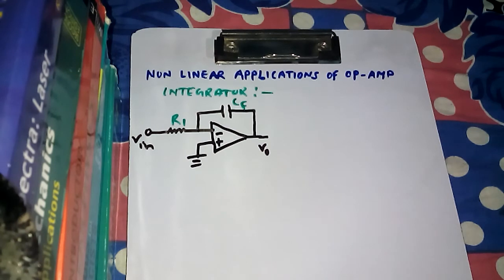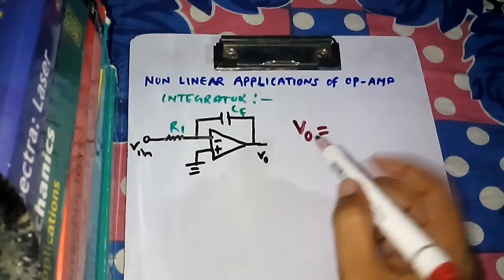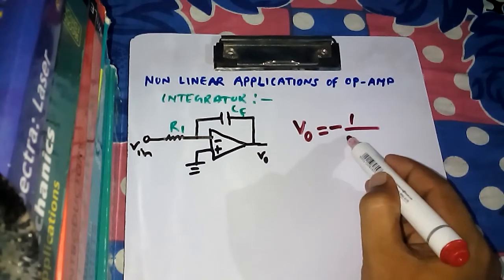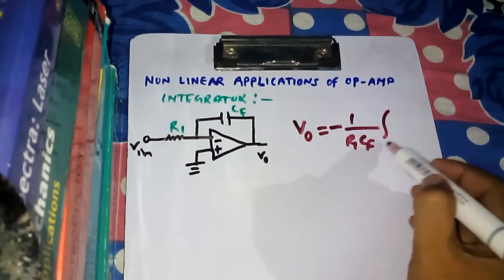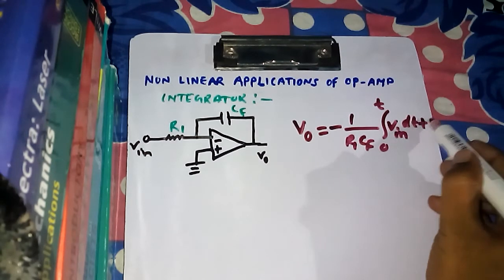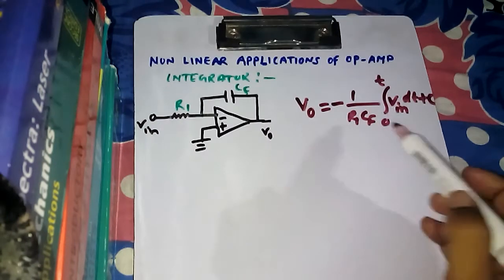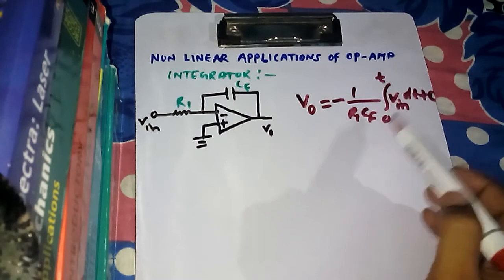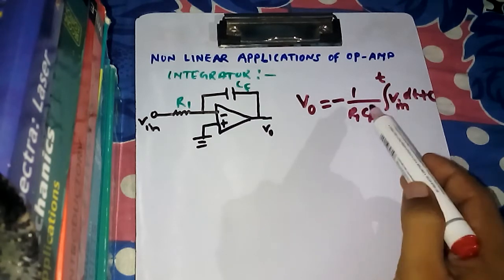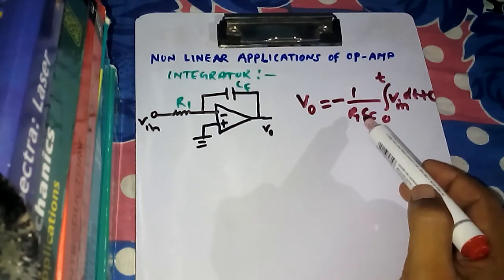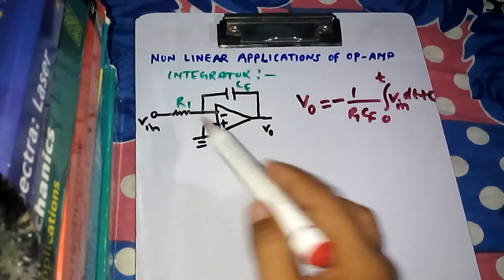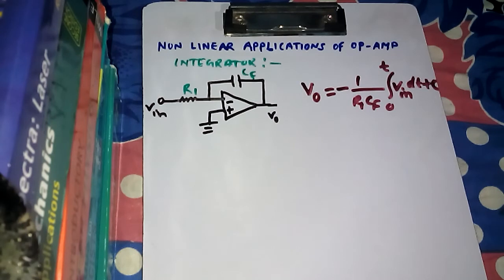Now we will write down the standard output voltage for the integrator circuit. V-output equals minus 1 divided by R1 times C-F, multiplied by the integration from 0 to T of V-input dt, plus a constant C. The output is the integral of the input, but there is also a scaling factor — also called gain — which depends on R1 and C-F, that means the resistance and capacitance values.